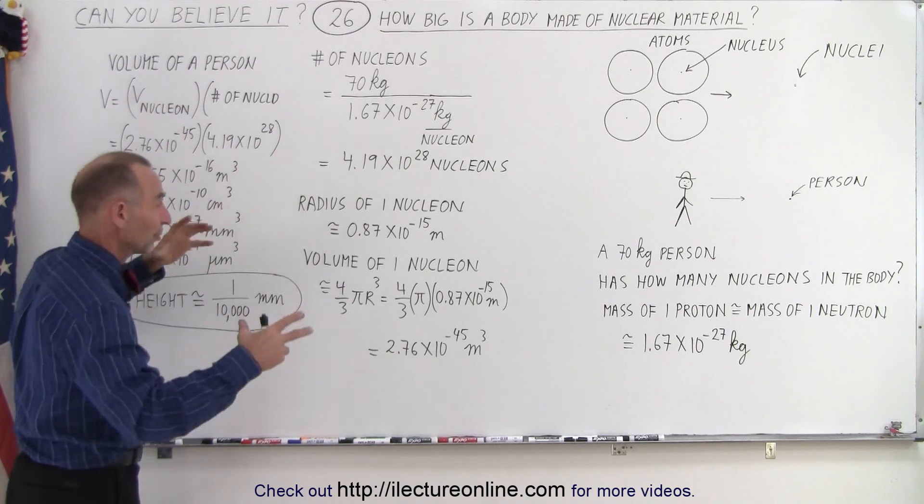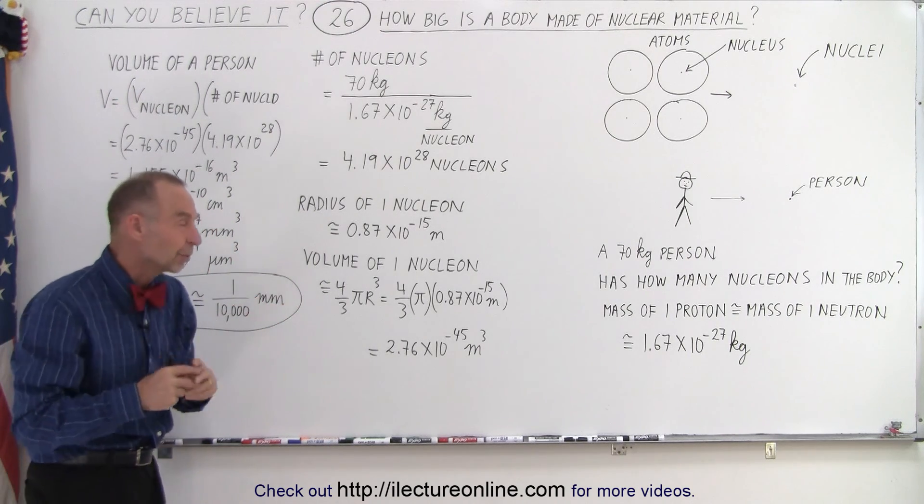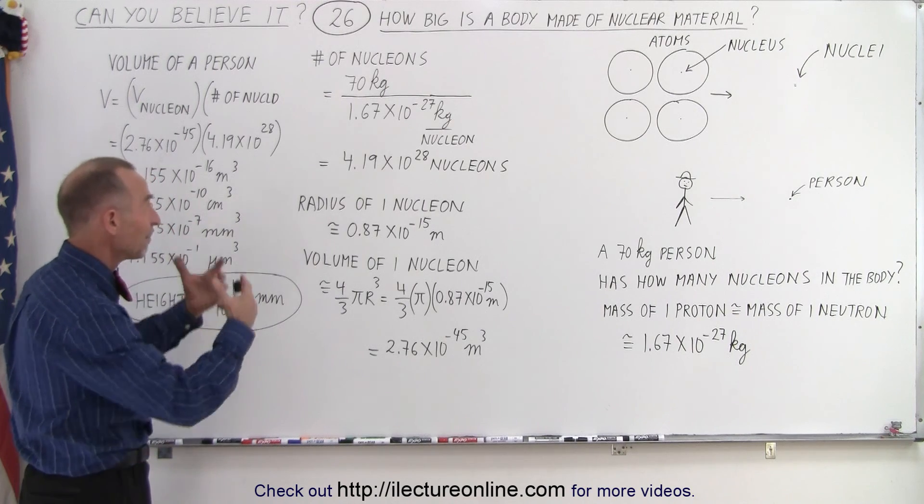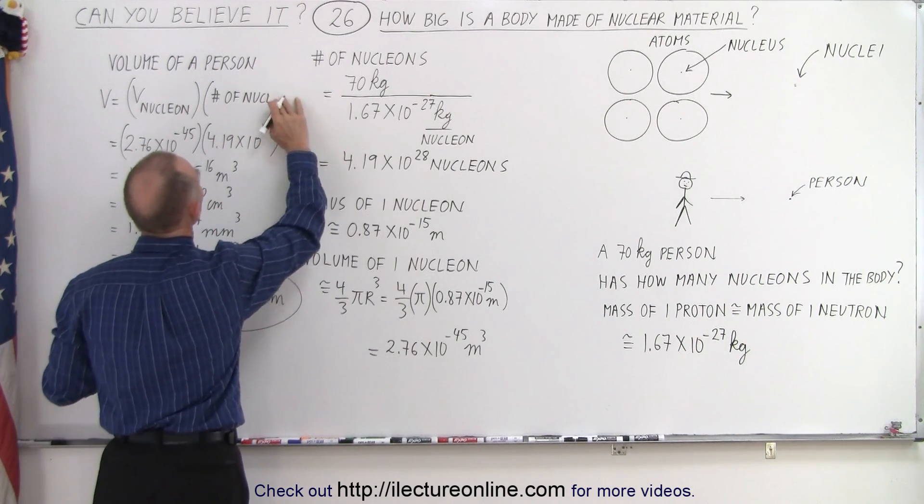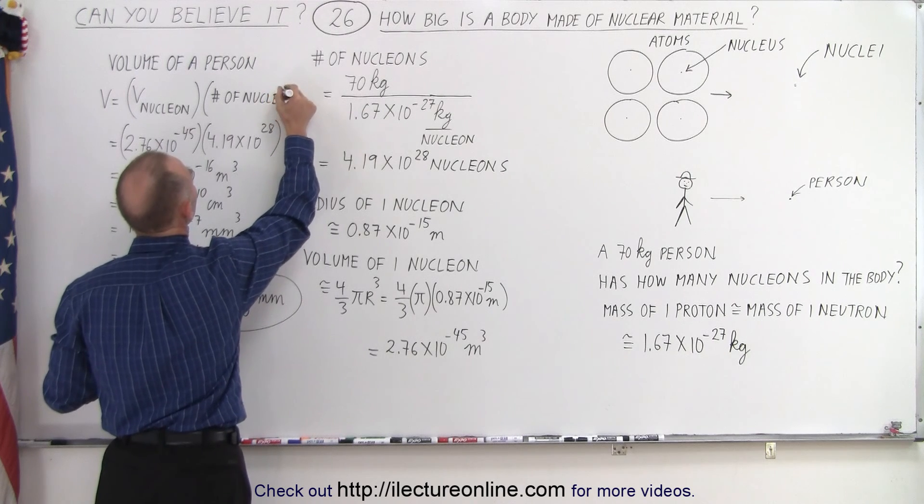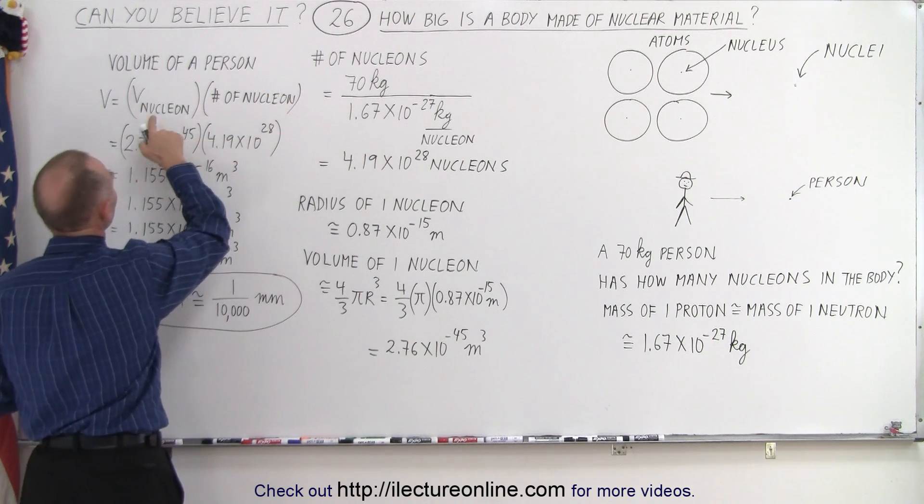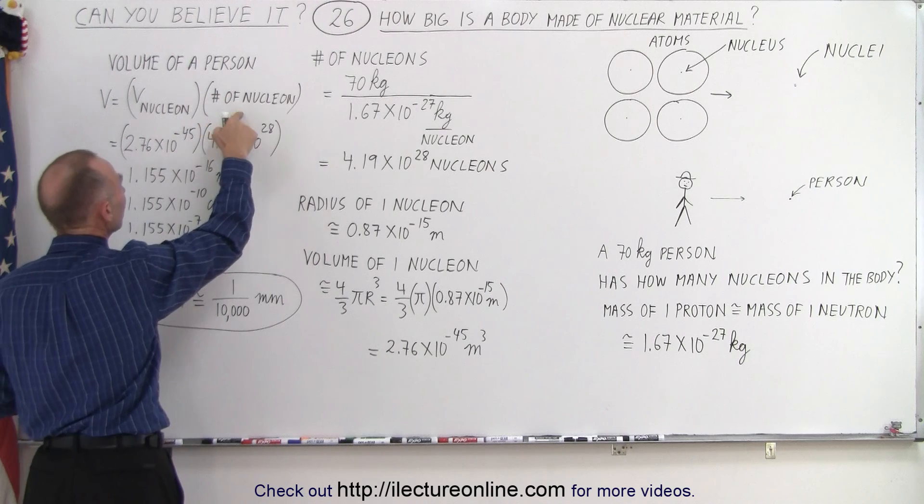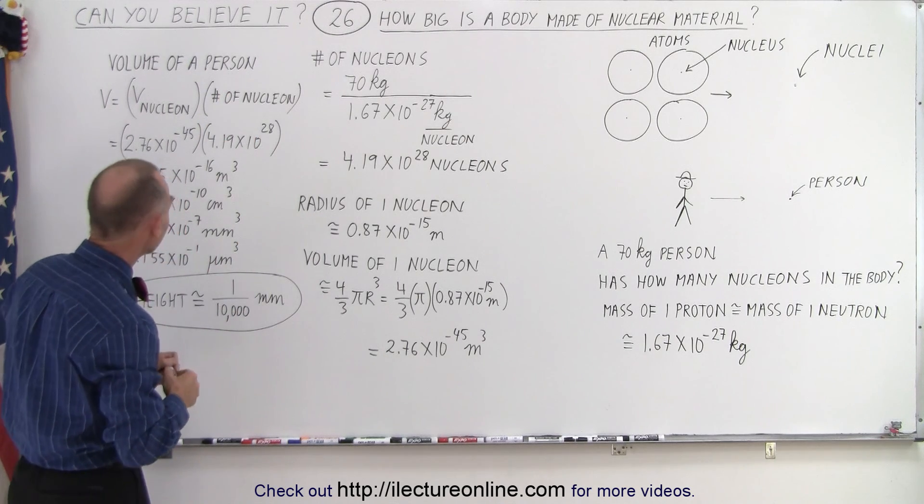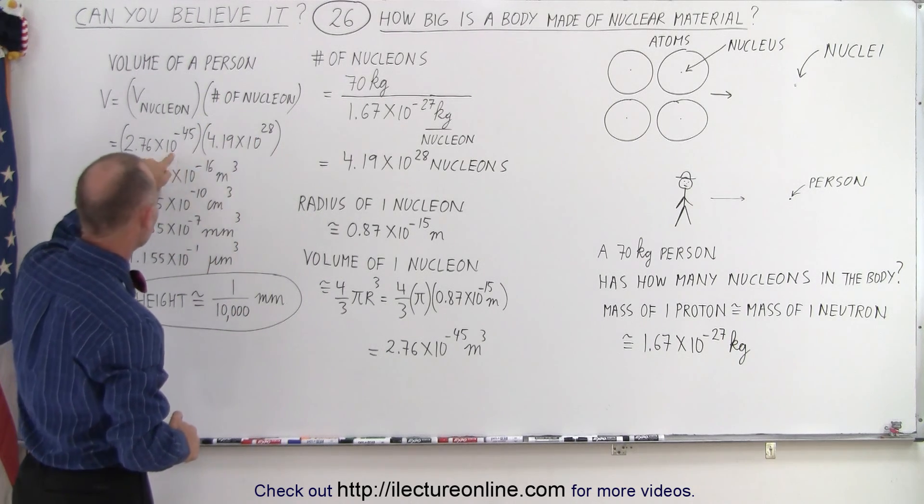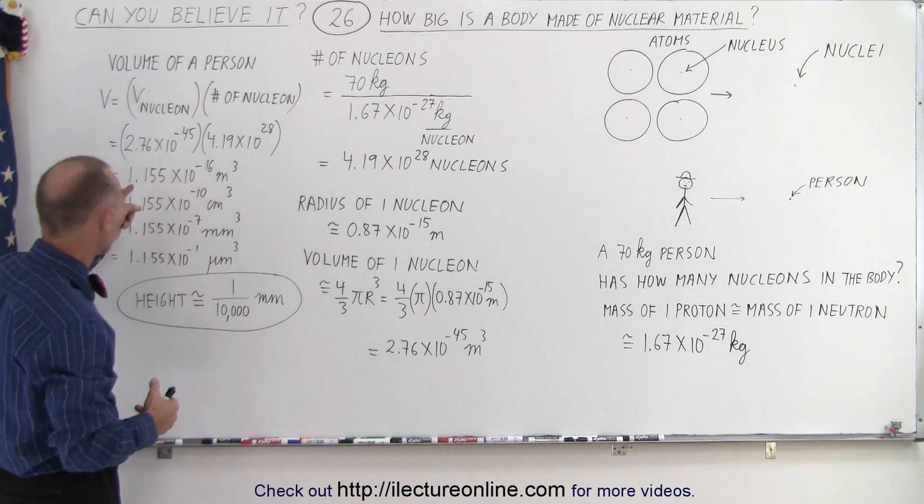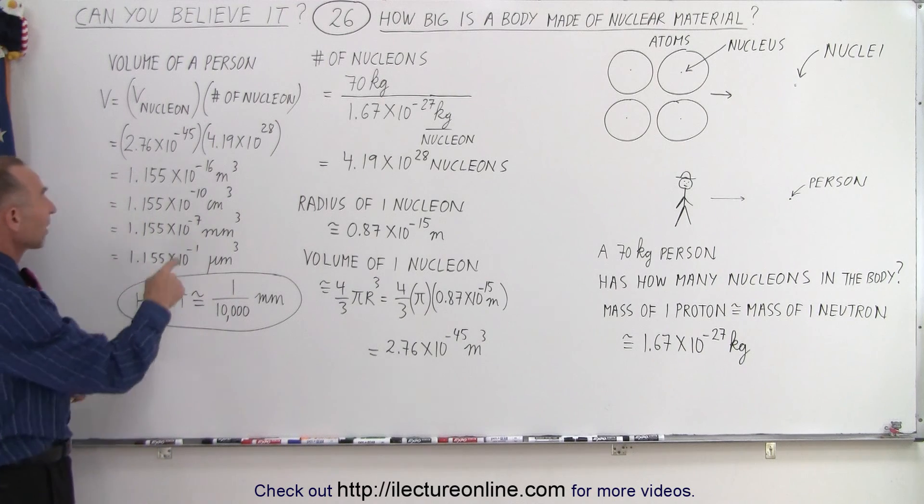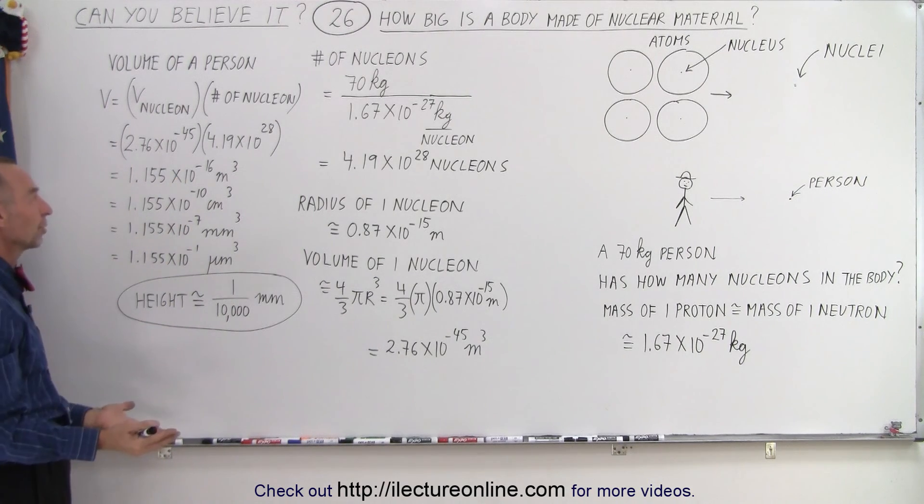Now, if you want to know the volume of a person just made out of nuclear material, which still would have the same mass of 70 kilograms, we multiply the volume of a nucleon times the number of nucleons in a person's body. So, that's the number of nucleons, that's the volume per nucleon, that would be the volume of a person. 1.155 times 10 to the minus 16 cubic meters. Now, that doesn't give us much of a feel of what that is.